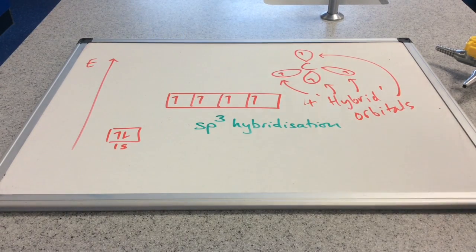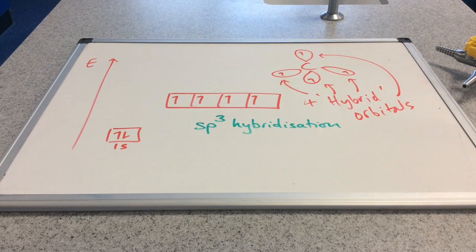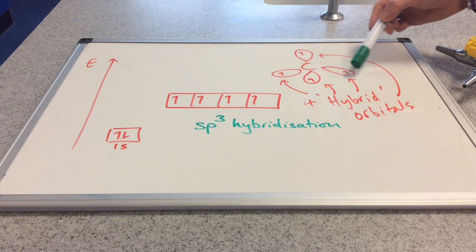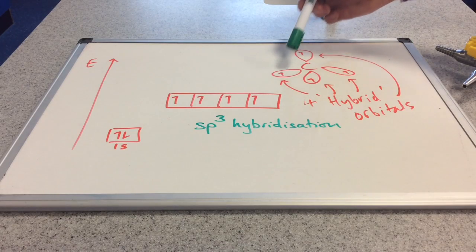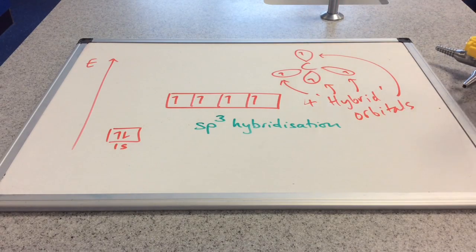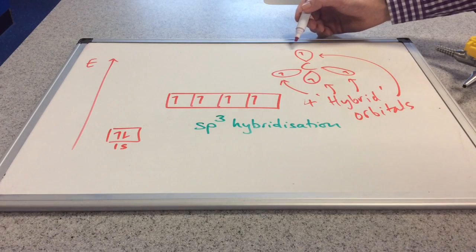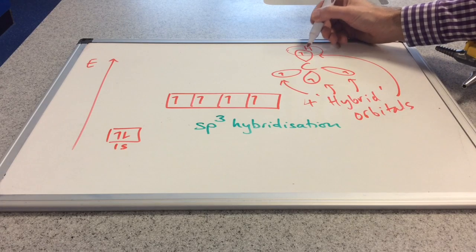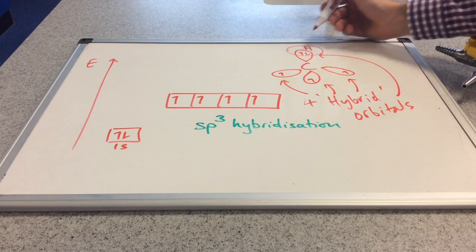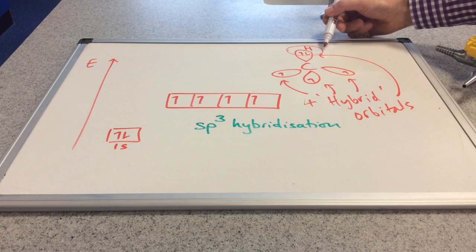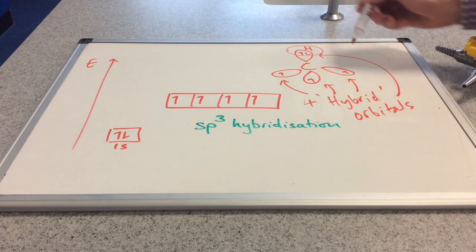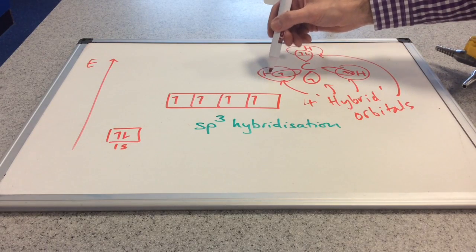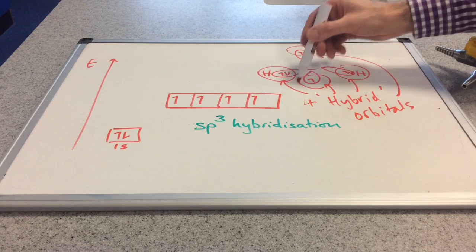So now if we think about the carbon atoms in the alkanes, you can see that we've got four identical regions of space orbitals around the carbon atom with one unpaired electron in. And so therefore if we bring our hydrogen in, there it is there with its one electron in its s orbital, you can see that it's possible to make a single covalent bond, a shared pair of electrons. And we've got the same here, the same here, and the same here.